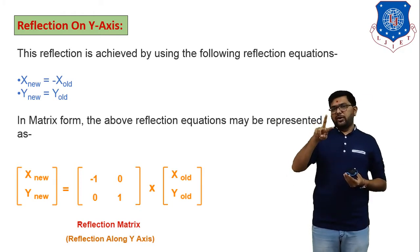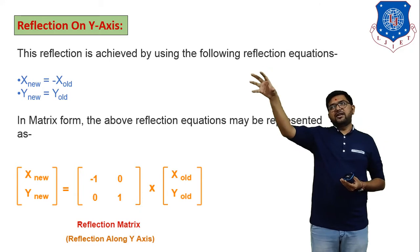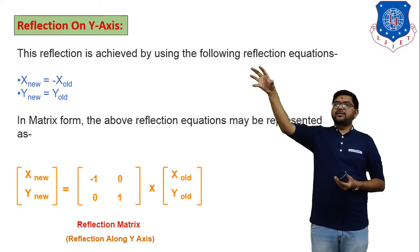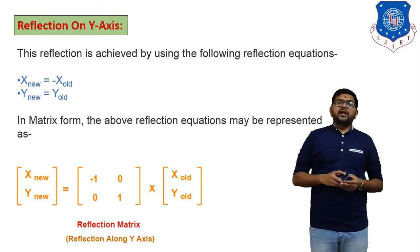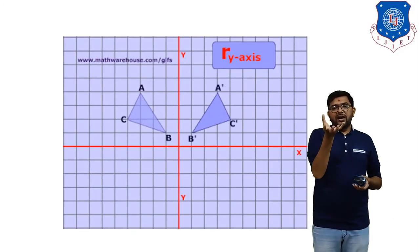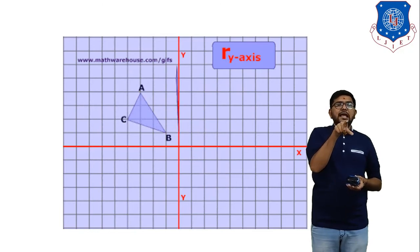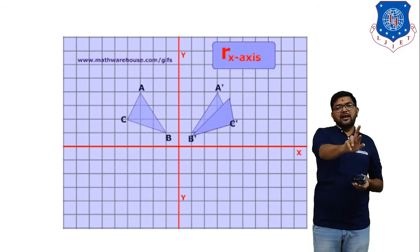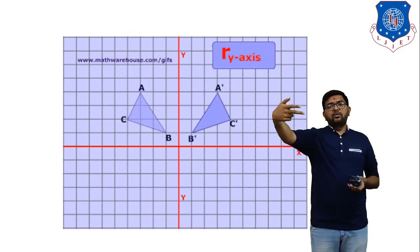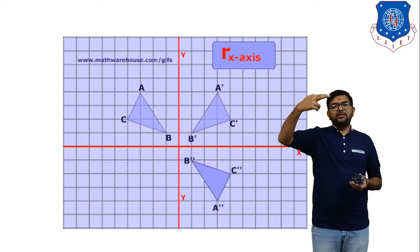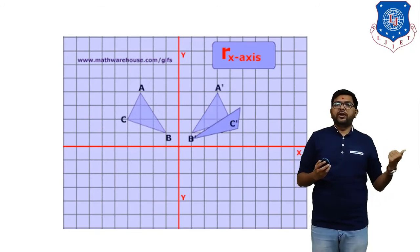To summarize: reflection about the x-axis generates the reflection in the fourth quadrant, while reflection about the y-axis generates the reflection in the second quadrant. In the animation shown, we have a triangle A, B, and C. If you find reflection about the y-axis, that triangle's reflection is generated in the second quadrant. Then finding reflection about the x-axis generates the reflection in the fourth quadrant. This animation helps you understand the reflection geometric transformation process easily.